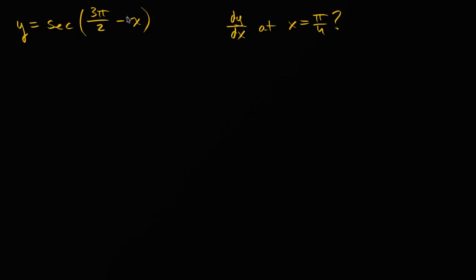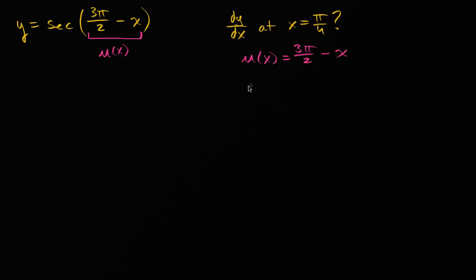We have a composite function. We're taking the secant not just of x, but of another expression — another function. If we call this u of x, so u of x is equal to three pi over two minus x, then u prime of x is going to be equal to the derivative of three pi over two, which is just zero, plus the derivative of minus x, which is just minus one — using the power rule.